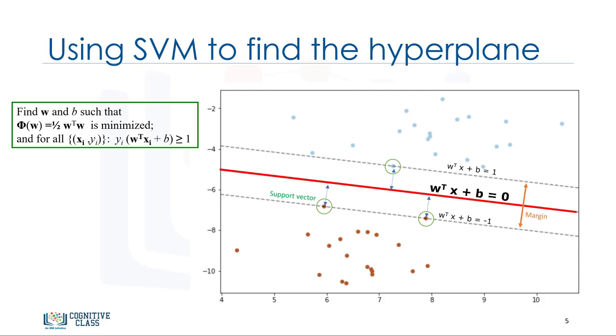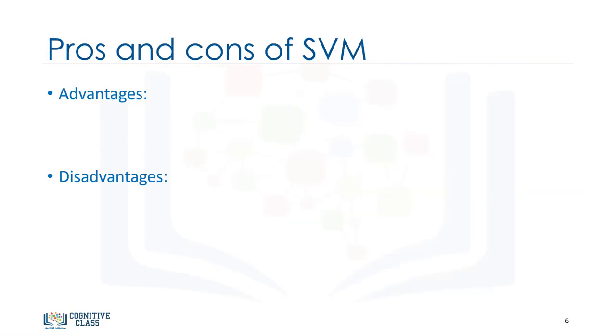The two main advantages of support vector machines are that they're accurate in high dimensional spaces, and they use a subset of training points in the decision function, called support vectors, so it's also memory efficient.